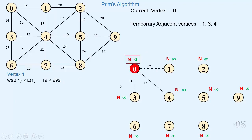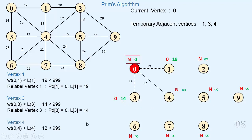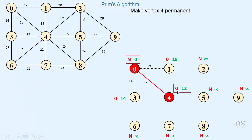First we take vertex 1: edge weight 19 is less than infinity, so we relabel it. Next we take vertex 3: edge weight 14 is less than infinity, so we relabel it. Next we take vertex 4: edge weight 12 is less than infinity, so we relabel this also. Now from all the temporary vertices, vertex 4 has the minimum value of length, so we make it permanent. Predecessor of 4 is 0, so edge (0, 4) is included in the minimum spanning tree. Now vertex 4 is the current vertex.